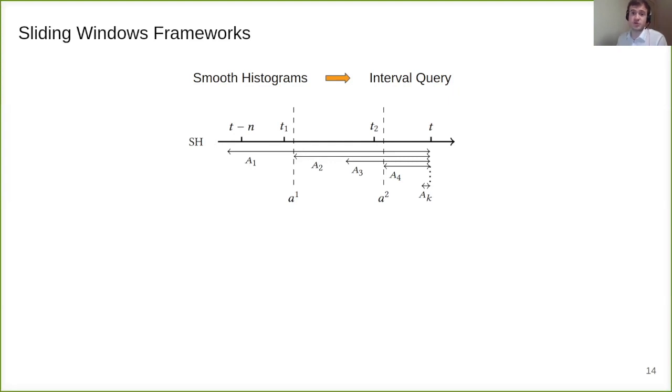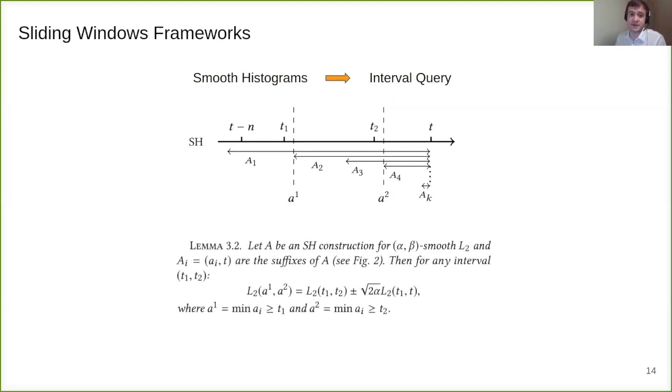For each case we need to prove that the value on the interval a1 to a2 is actually good approximation for the value on the interval T1 and T2. For example, one can estimate the L2 norm using this trick by utilizing only 1 over epsilon to the 6 log N memory.